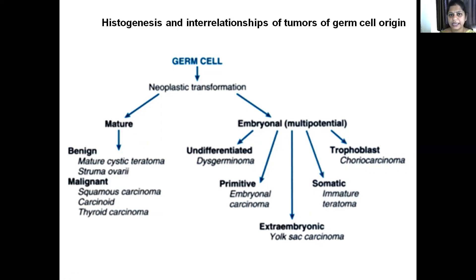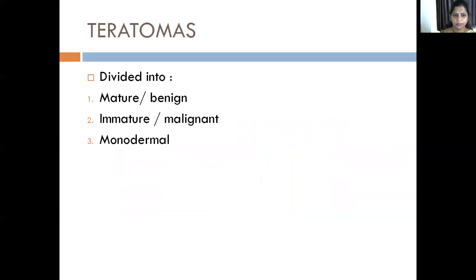Trophoblasts are cells of the placenta. Now, coming to the first and foremost ones — these are the teratomas.